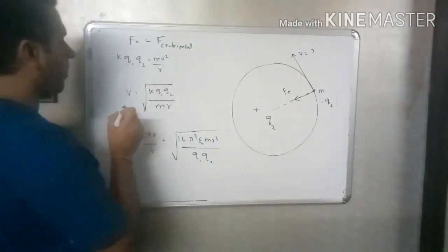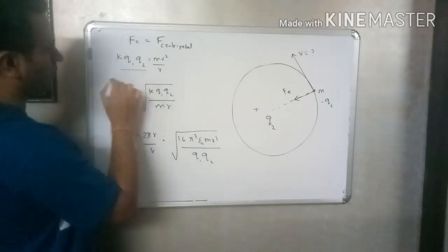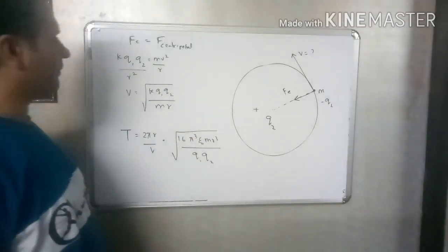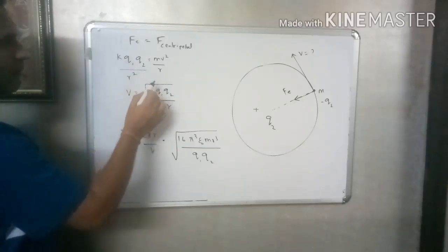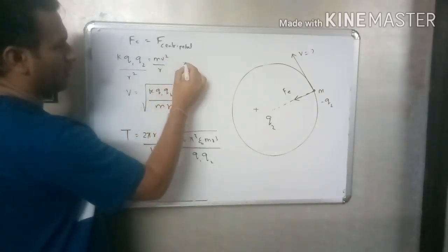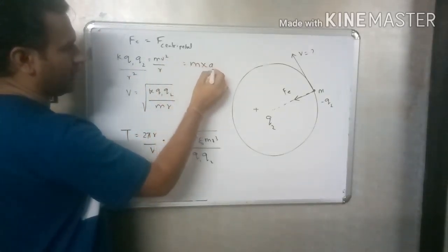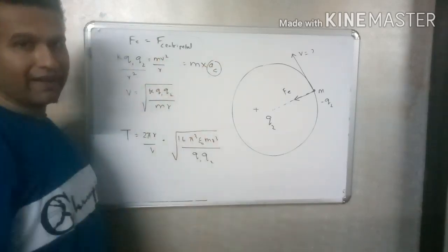Okay, q1 q2 divided by r square is the formula. So the electric force, the electric force equals the centripetal force, which is mass into centripetal acceleration.